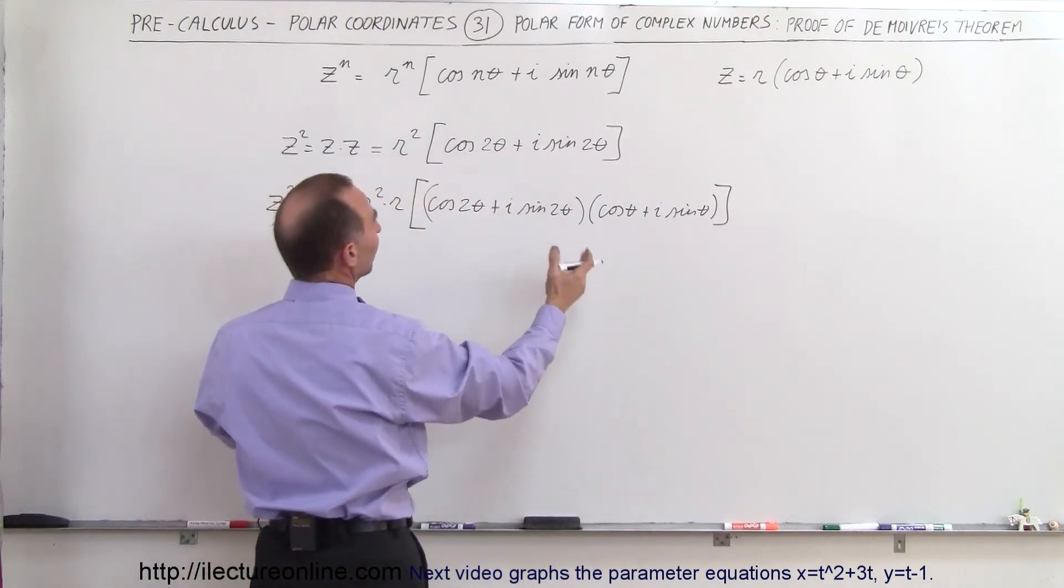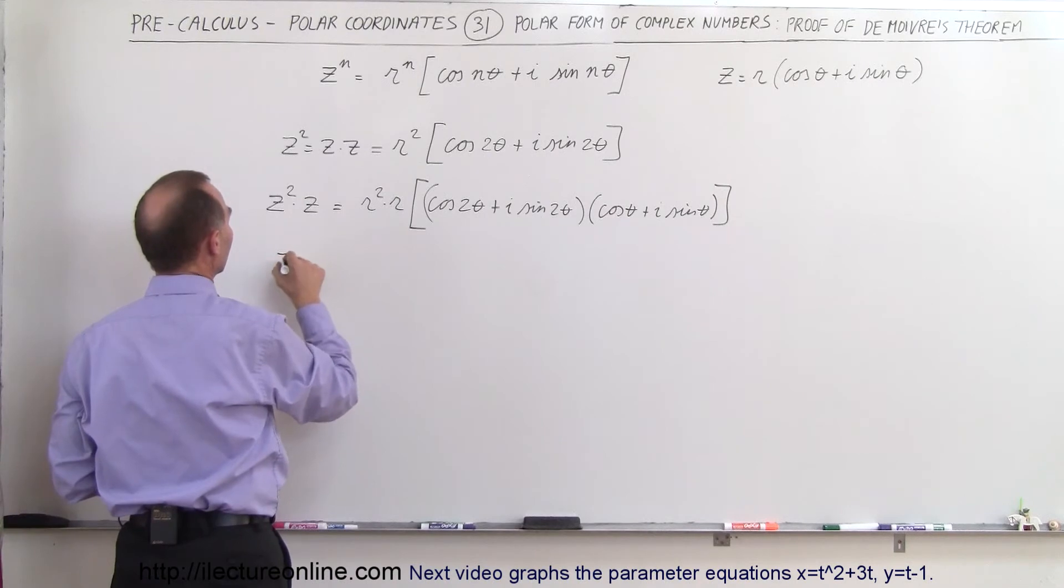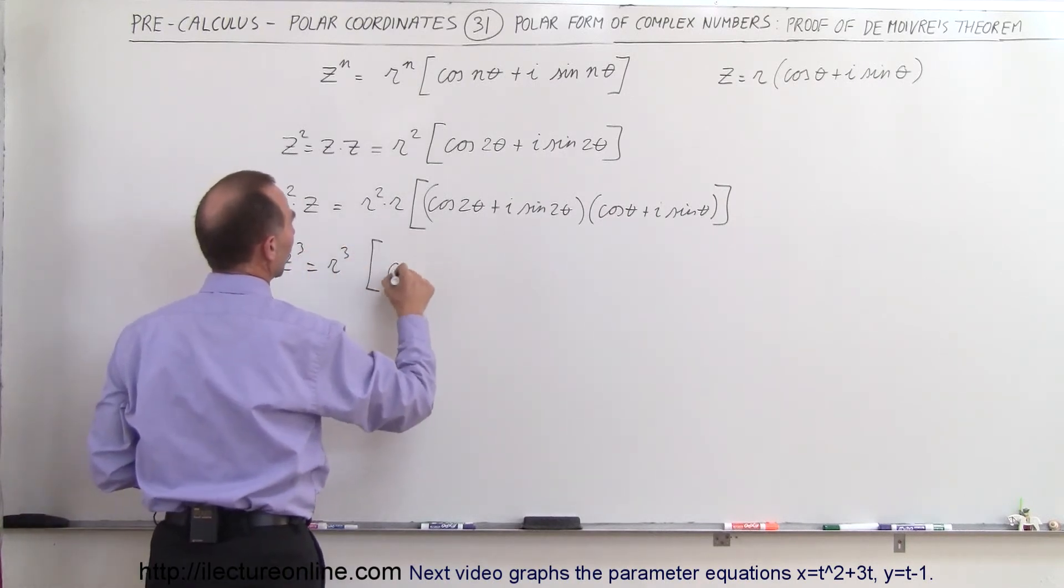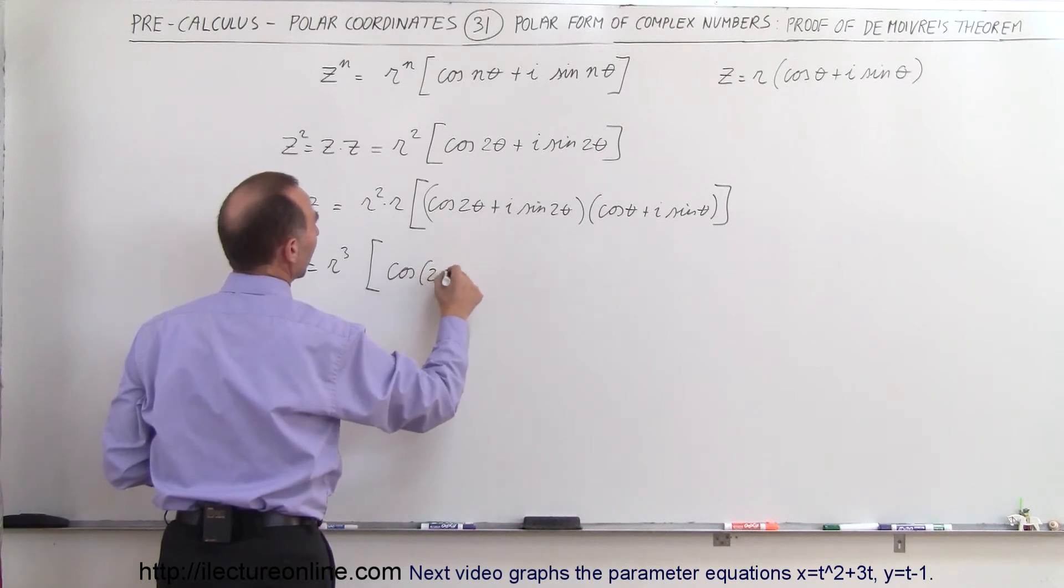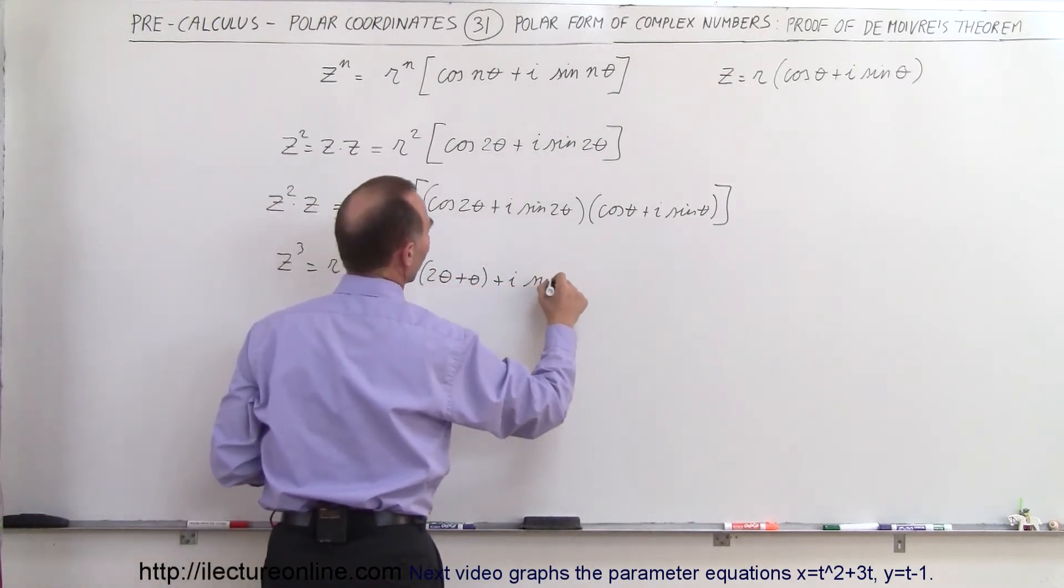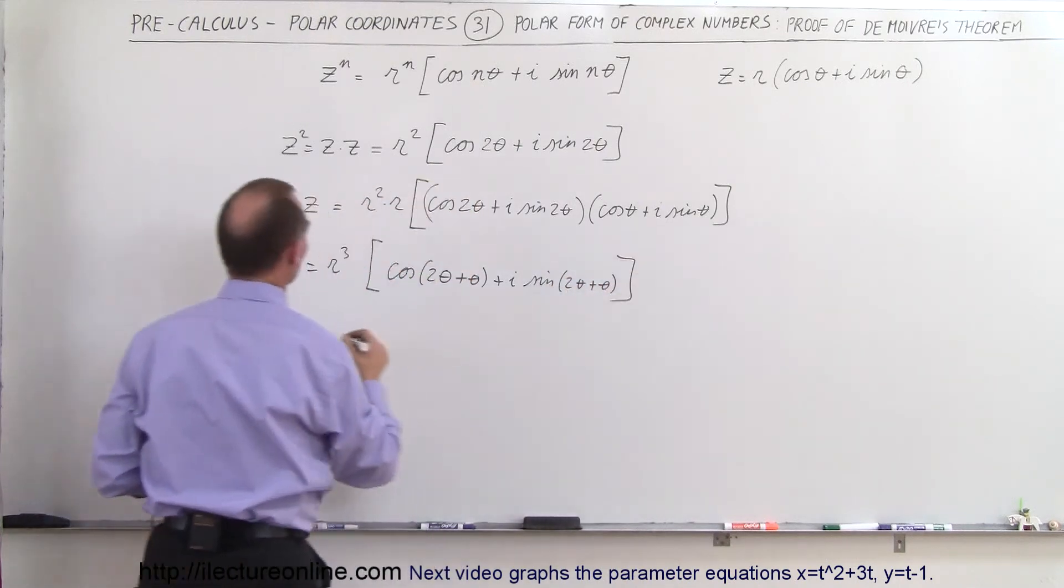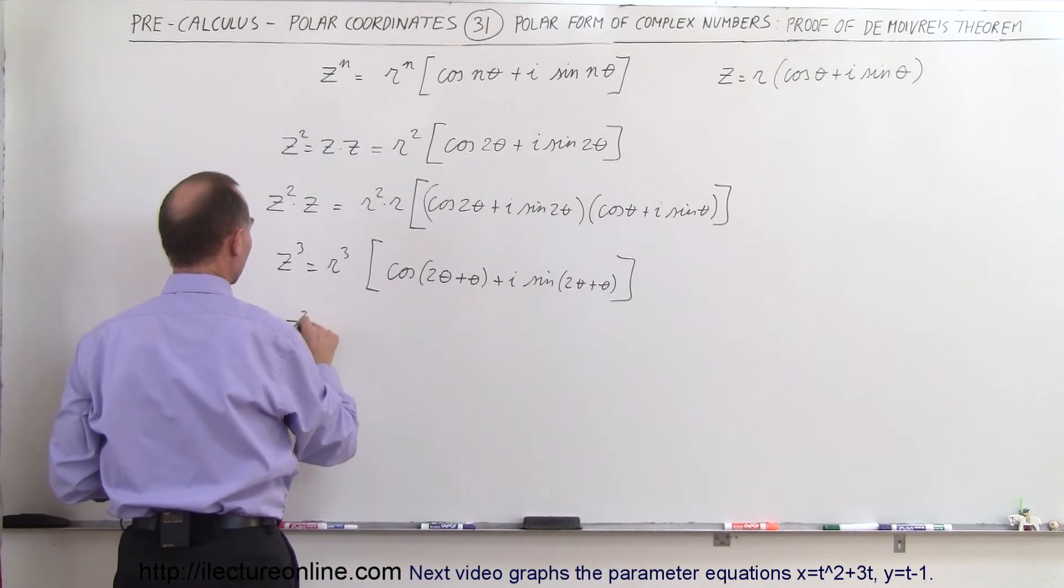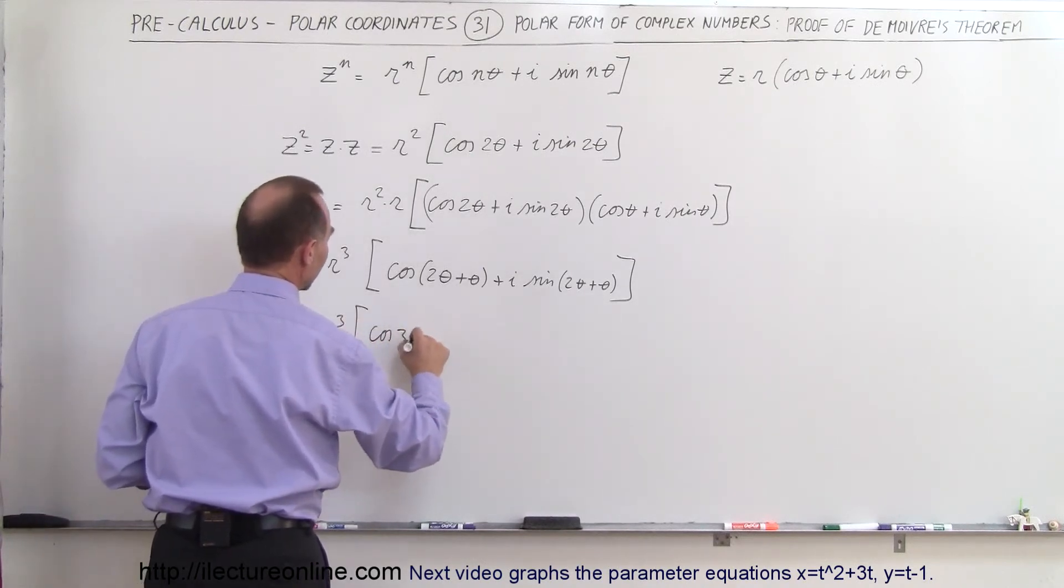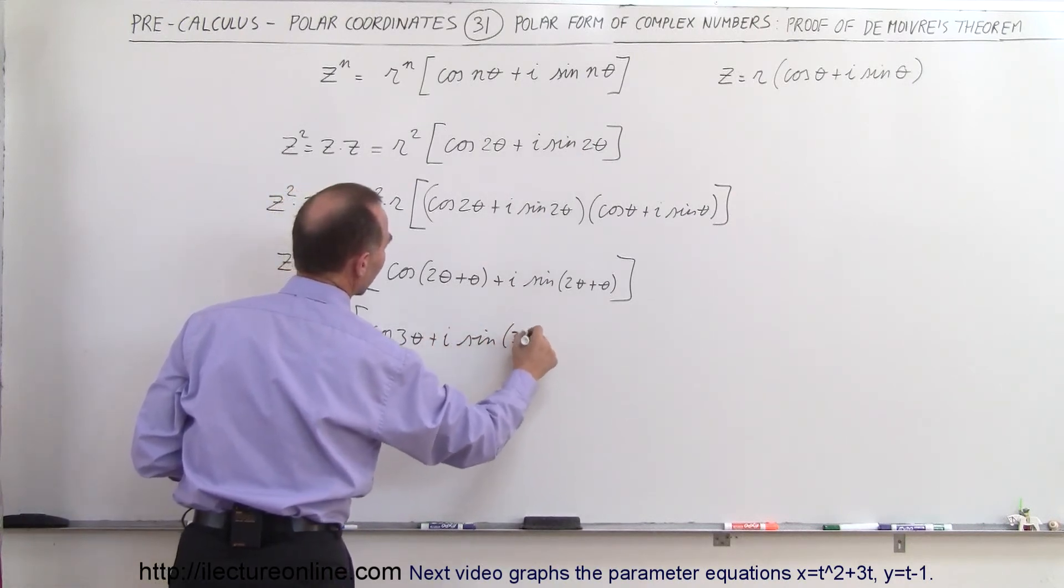We're going to add the angles together, so z cubed equals r cubed times cosine of 2 theta plus theta, plus i times sine of 2 theta plus theta. And we can see that z cubed equals r cubed times cosine of 3 theta plus i times sine of 3 theta.